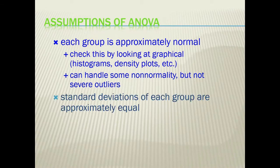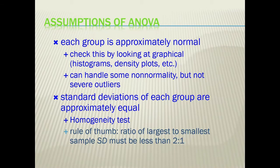We also want to assume that our standard deviations of each group are approximately equal. So we can check on this through running a homogeneity test when we're running our statistics. Or we can also just use the rule of thumb that the ratio of the largest to the smallest standard deviation should be less than two to one. We want to keep these in mind when we're about to run our ANOVAs.